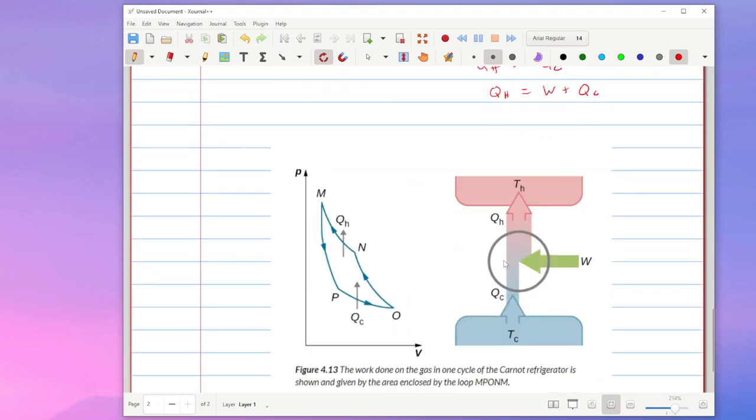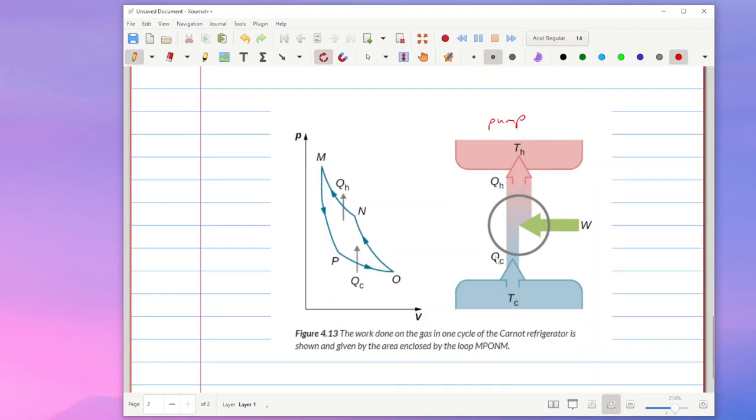Conversely if we have a pump going counterclockwise around the diagram. And when you've got that pump we end up having a net amount of work in. And it turns out we're actually drawing heat in from the cold side. And we have heat out to the hot side.